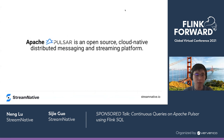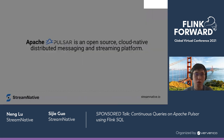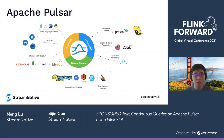So what is Apache Pulsar? Apache Pulsar is an open-source cloud-native distributed messaging and streaming platform, which consists of three major parts: messaging, stream storage, and processing.